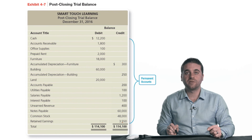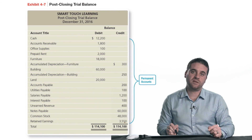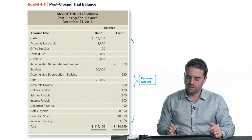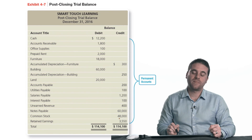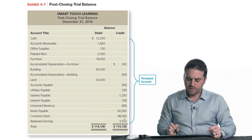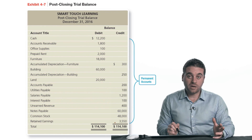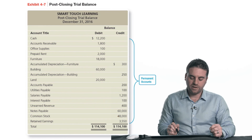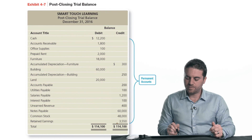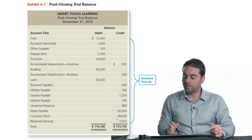The post-closing trial balance shows only permanent accounts. Total debits still equal total credits, confirming we didn't make any mistakes going through the whole process. This is the last step in our accounting cycle.